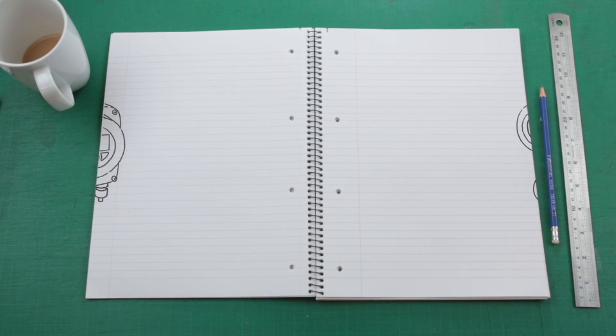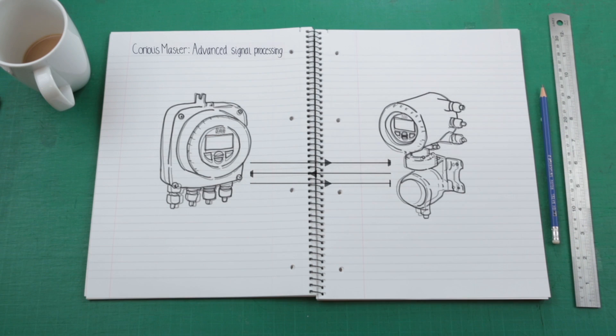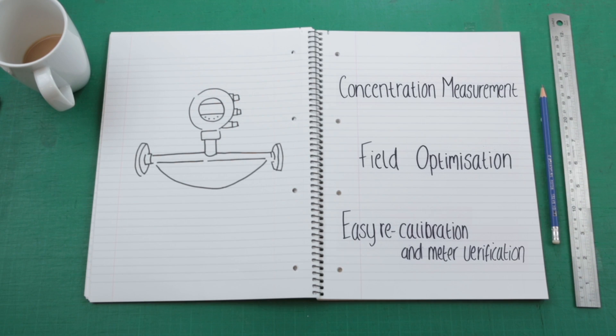Class-leading measurement is complemented by a state-of-the-art transmitter, with a comprehensive range of control algorithms. The simplest user interface in the industry, and software features like concentration measurement, field optimization for easy recalibration, or meter verification.